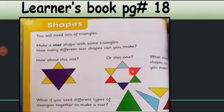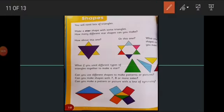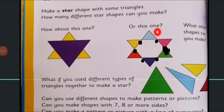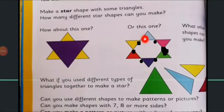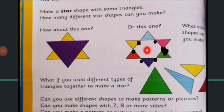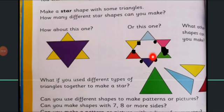Now look inside the star shape — can you see another shape inside? Count its corners: one, two, three, four, five, six. The inside shape has six corners and six sides. Do you remember the shape with six sides and six corners? Yes, it's a hexagon. Six triangles are used to make the star, and looking inside, another shape is formed — a hexagon.